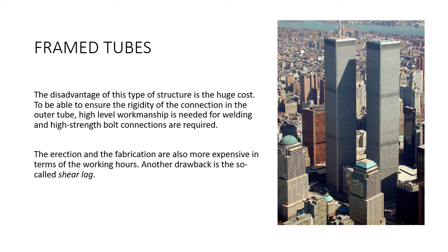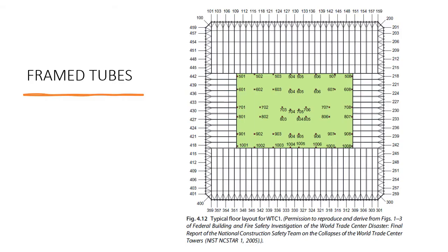The picture in this report shows the Twin Towers in America, known for the September 11 terrorist attack. This is the typical floor layout of the World Trade Center. As we can observe, in the exterior part there are very closely and tightly packed columns, whereas in the core there is a more spacious distance between columns.